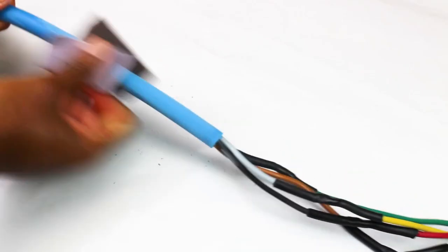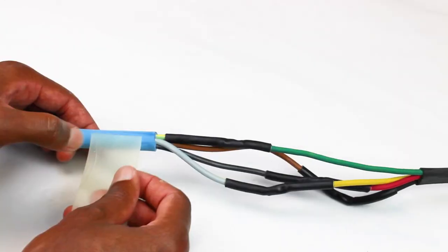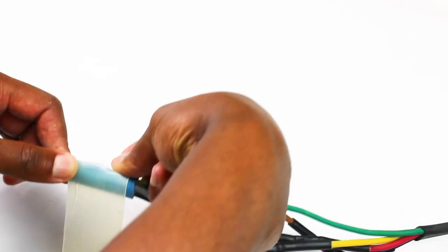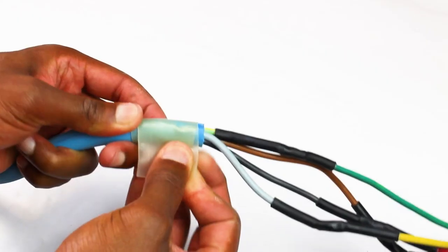Sanding the cable jacket's ends provides a better grip for the thin glue reinforcement and for the bigger shrinking tube as well.